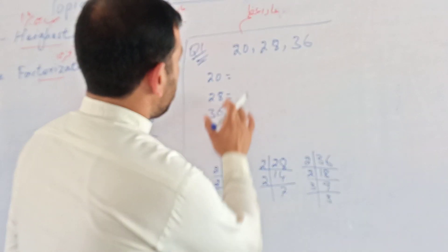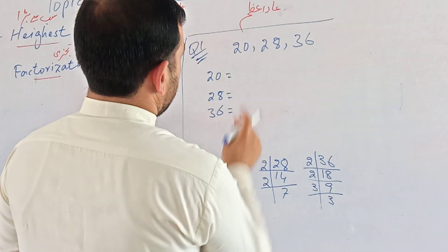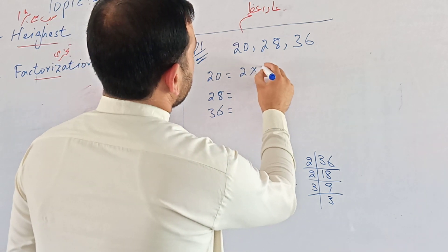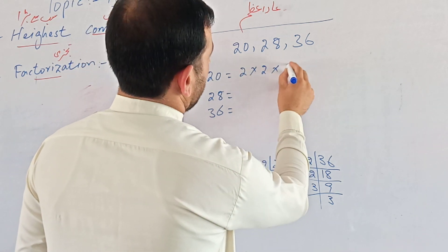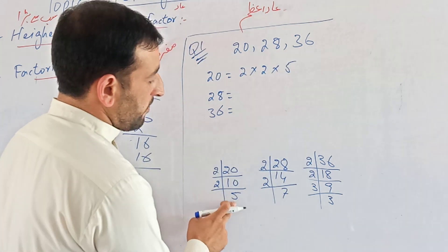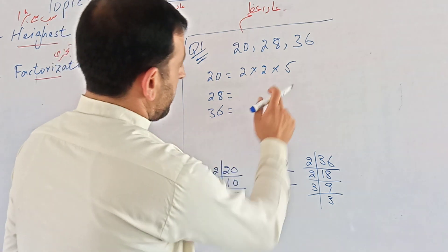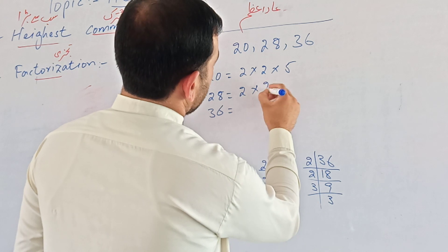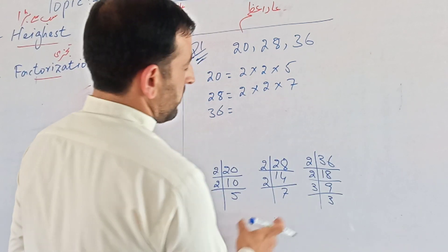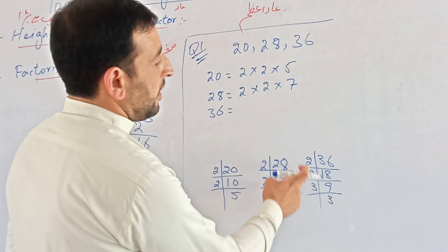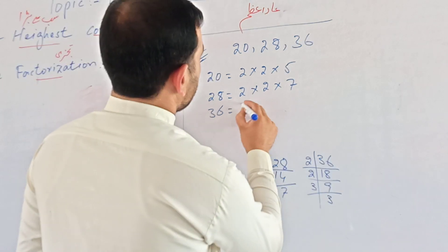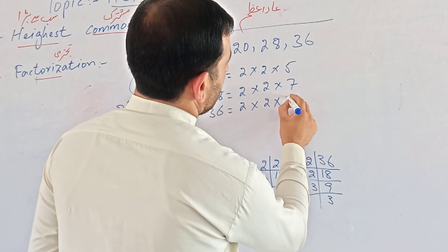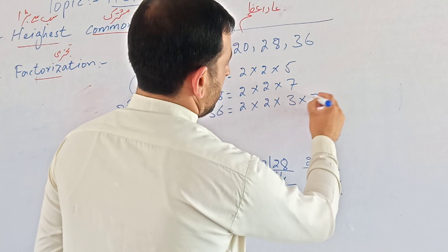So the prime factorizations are: 20 equals 2 multiplied by 2 multiplied by 5. 28 equals 2 multiplied by 2 multiplied by 7. 36 equals 2 multiplied by 2 multiplied by 3 multiplied by 3.